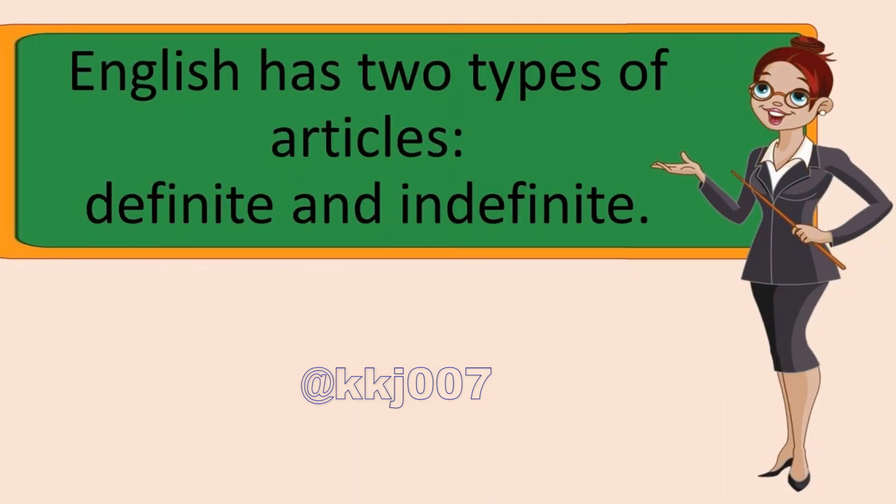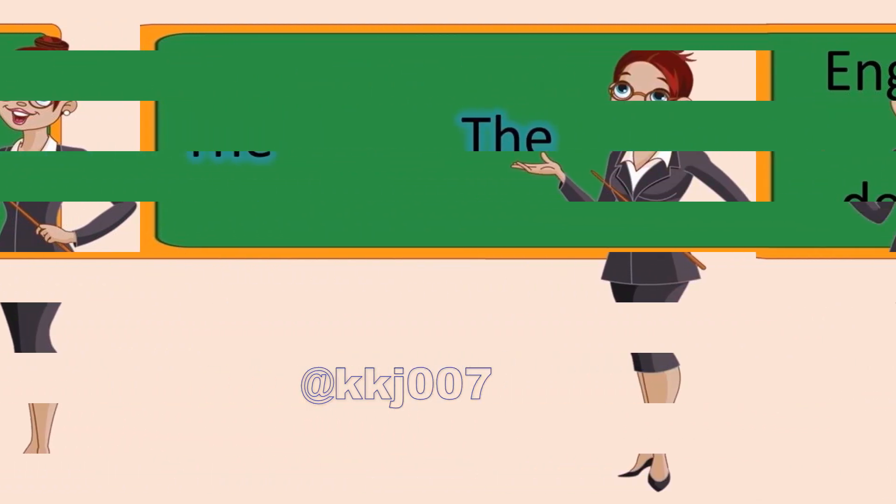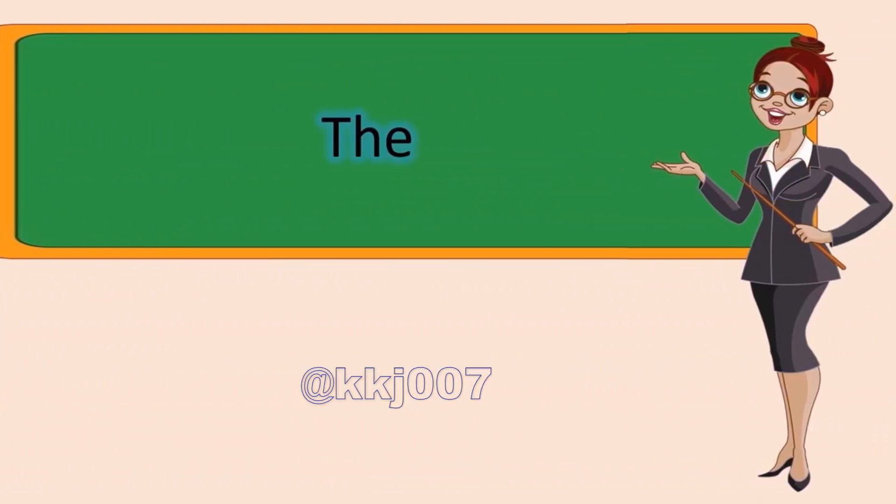English has two types of articles: definite and indefinite. Let's discuss them now in more detail. First we talk about the definite article. The definite article is the word 'the'. It limits the meaning of a noun to one particular thing. For example, your friend might ask: are you going to the party this weekend? The definite article tells you that your friend is referring to a specific party that both of you already know about. The definite article can be used with singular, plural, or uncountable nouns. Below are some examples of the definite article 'the' used in context.